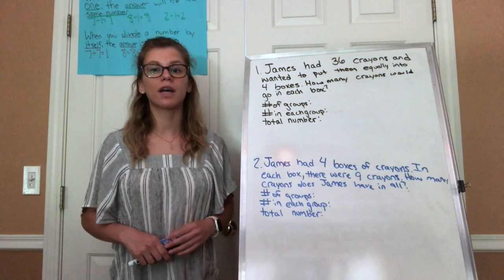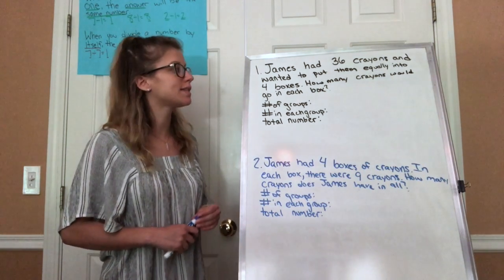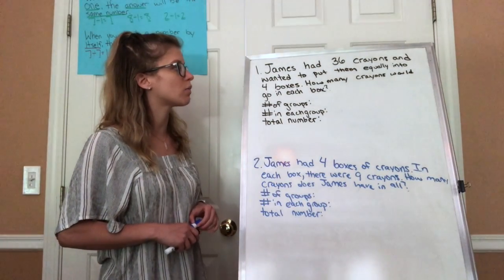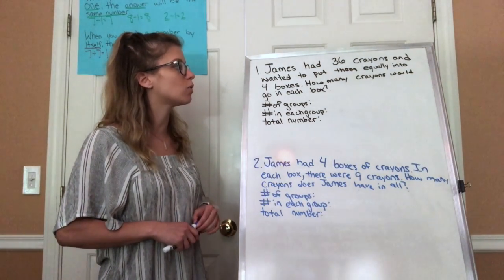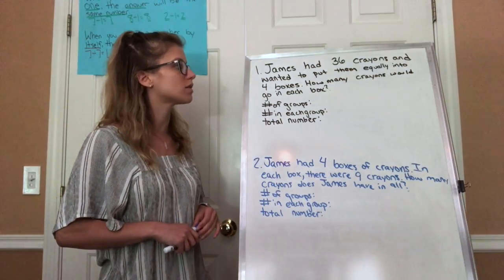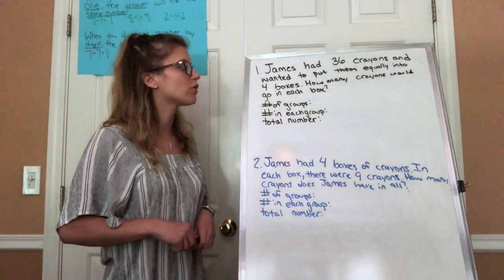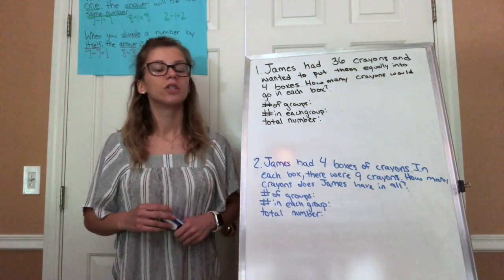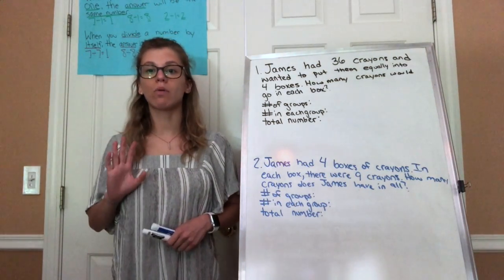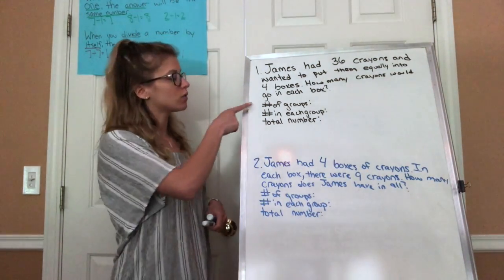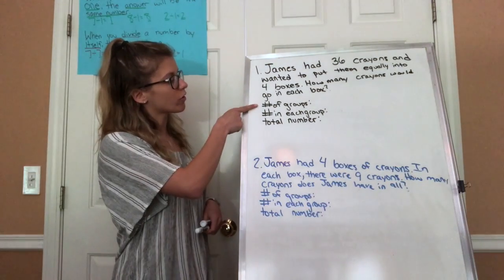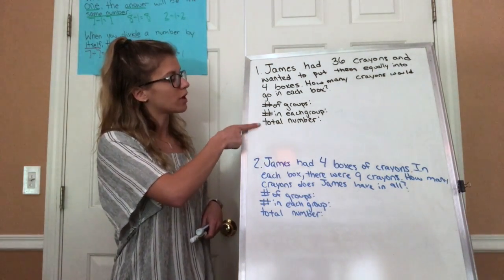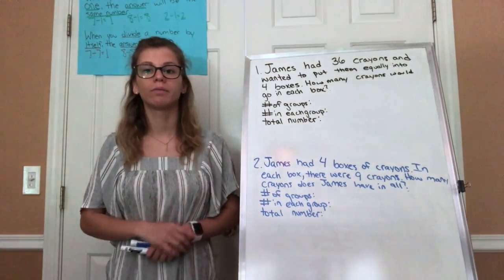Let's take a look at our first problem. It says James had 36 crayons and wanted to put them equally into four boxes. How many crayons would go in each box? I'd like you to pause and take notes using number of groups, number in each group, and total number.